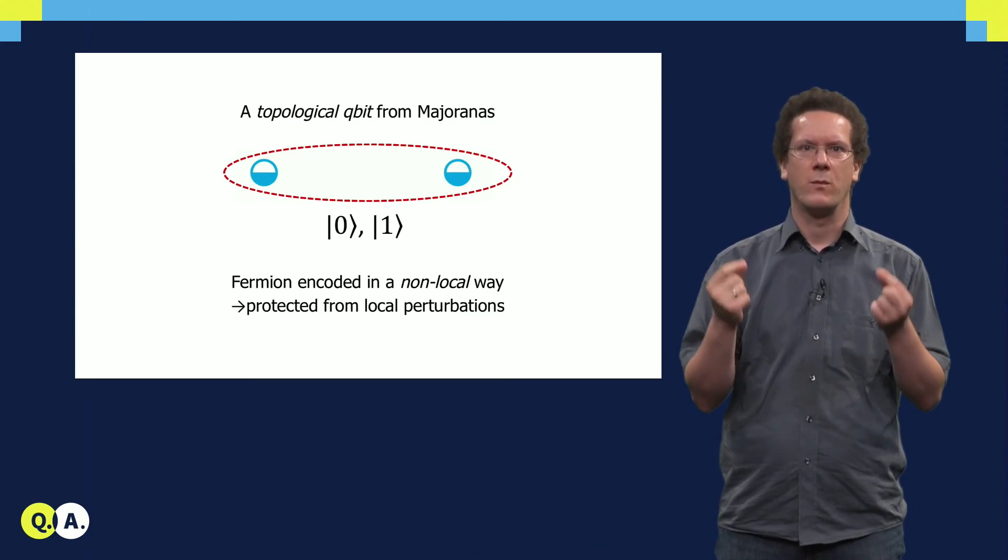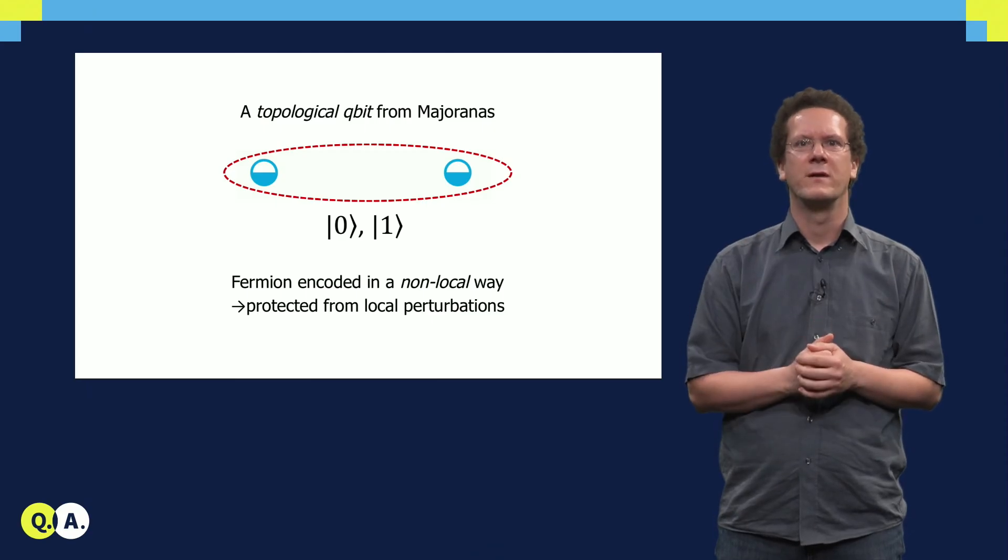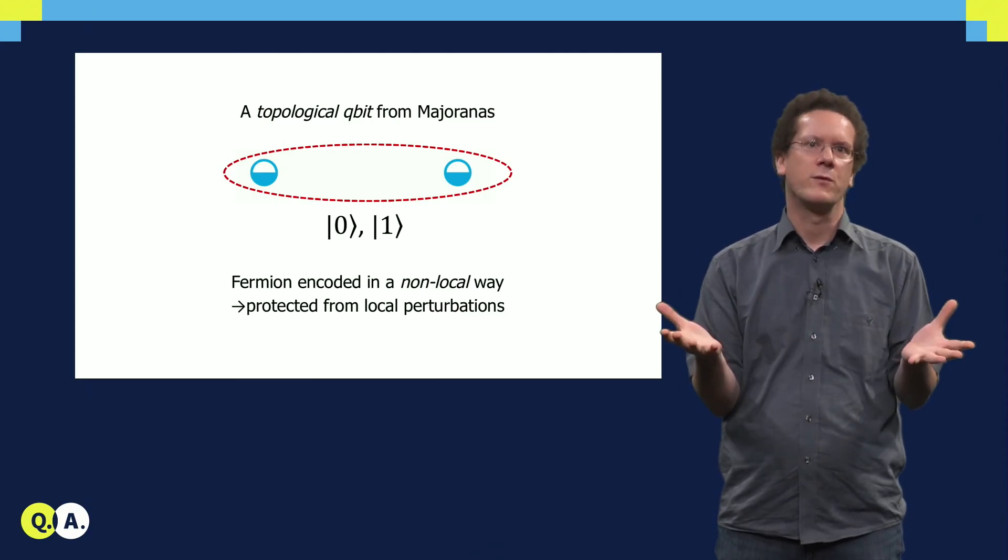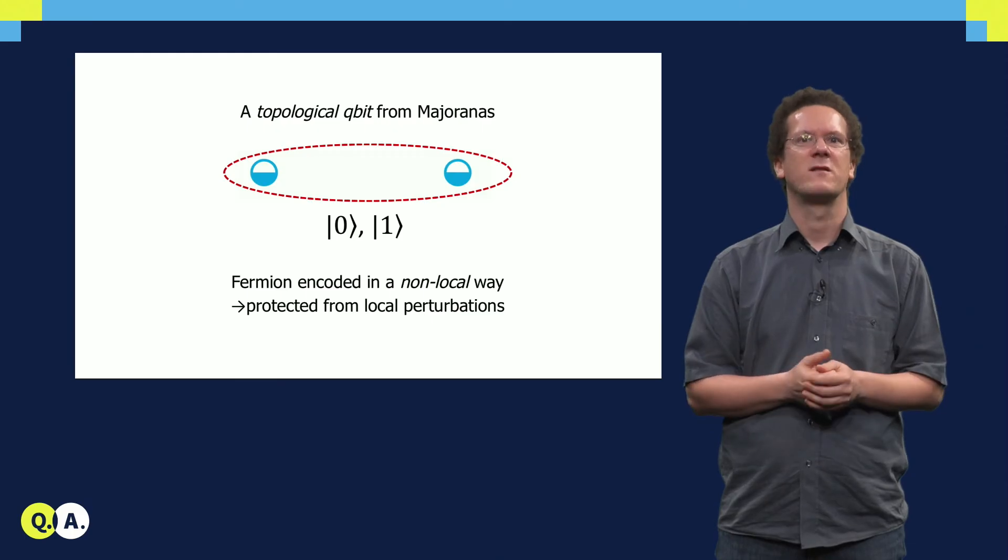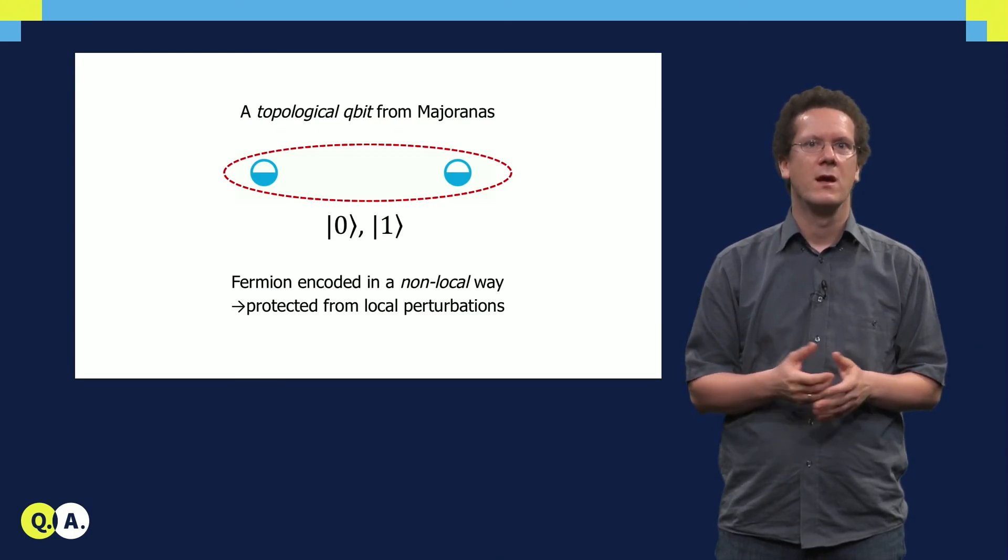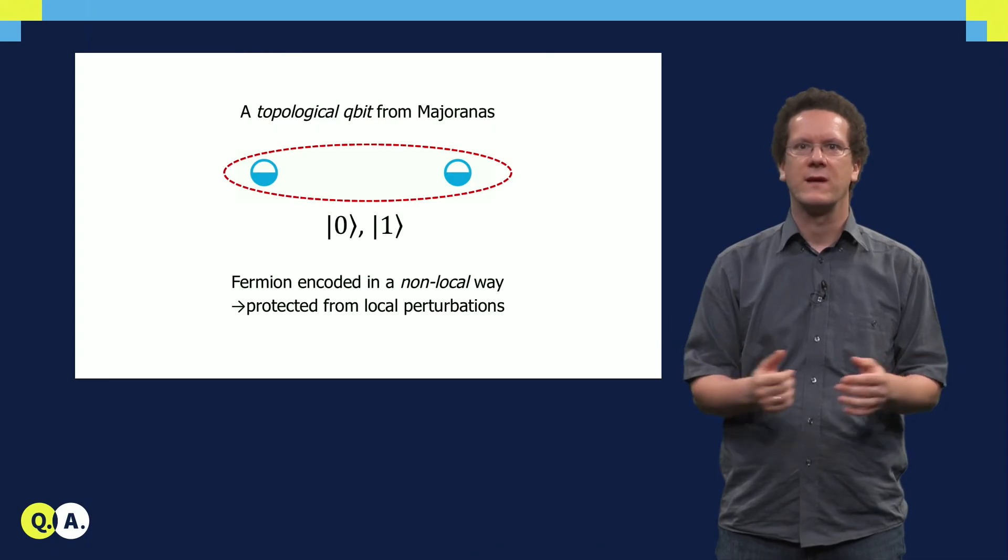Two Majorana bound states form one topological qubit, which is protected against almost all sorts of perturbations and is expected to have a very long coherence time. For that reason, it is very interesting to look for Majorana bound states in condensed matter.